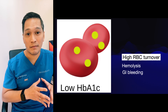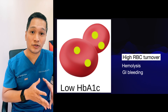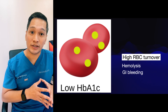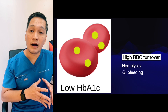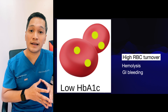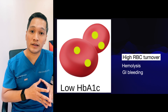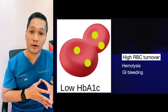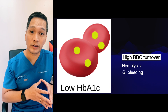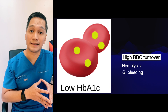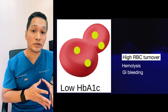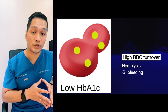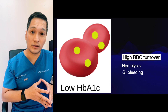In conditions with rapid RBC turnover, such as hemolysis or blood loss in a situation like GI bleeding, RBCs stay in circulation for a shorter amount of time. Therefore, there will be a lower number of glucose molecules attached to hemoglobin, and the result will show a falsely low hemoglobin A1c.